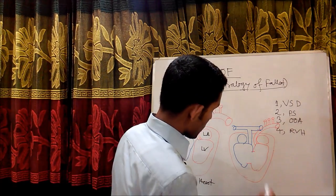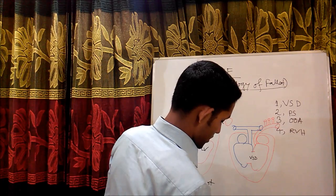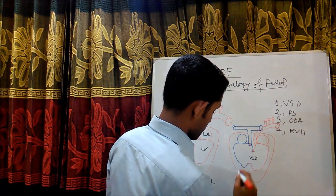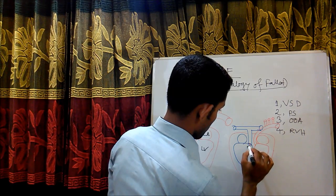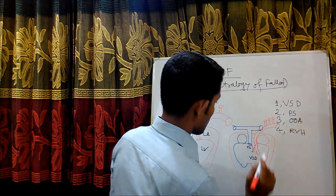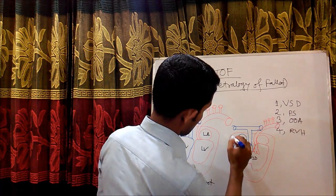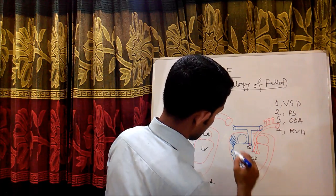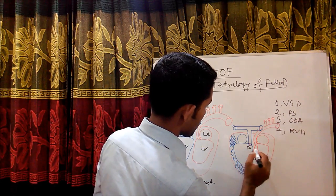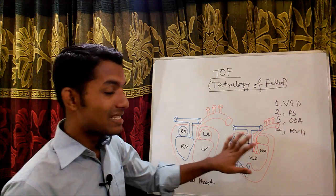In Tetralogy of Fallot, there is a large VSD. Then there is pulmonary stenosis. There is overriding of aorta. And there is right ventricular hypertrophy. So the four components are: number one VSD, number two pulmonary stenosis, number three overriding of aorta, and number four right ventricular hypertrophy. This is what happens inside the heart in Tetralogy of Fallot.